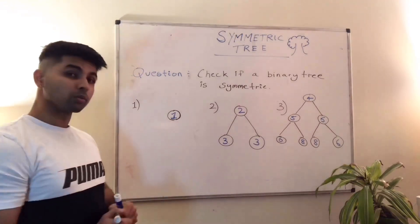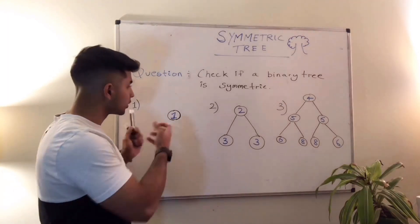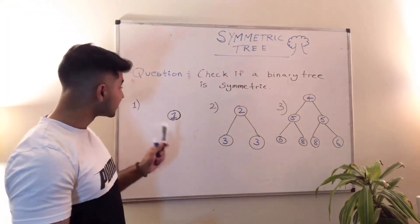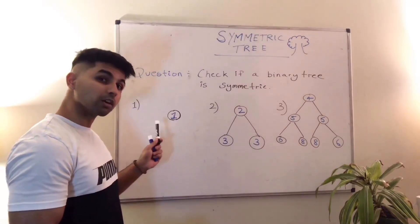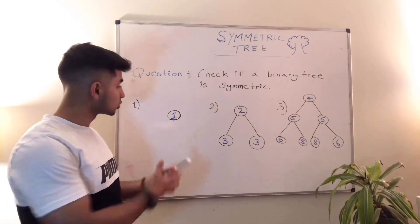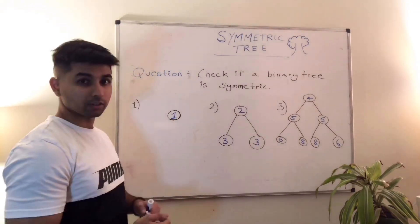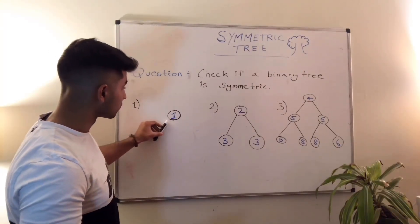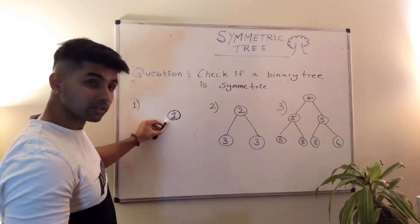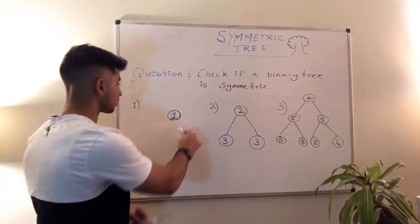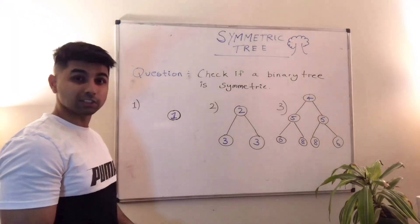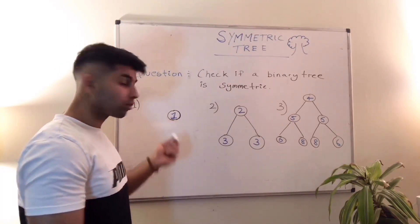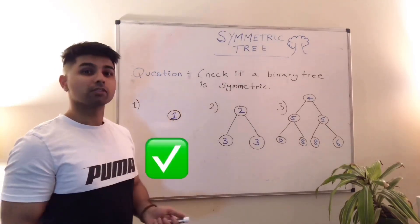For example number one, the first thing you do is take a mental note of the entire tree given to you. In this case, we are only given a root node — that's all we're given. Step two is to check if the root node has a left subtree or a right subtree. It has none. If you only have one node, it's symmetric either way.